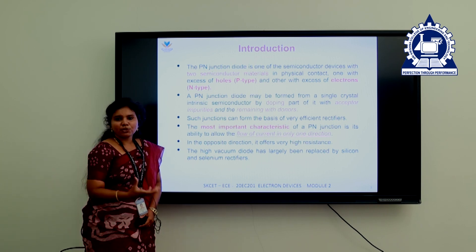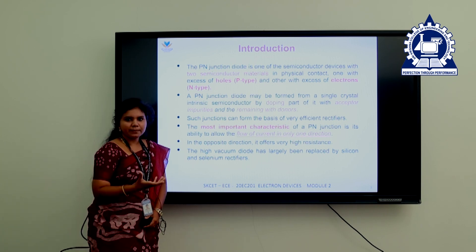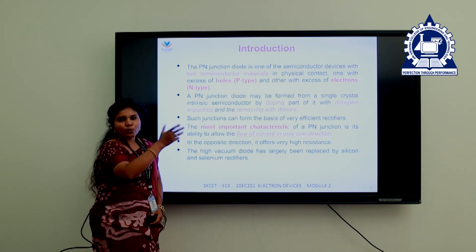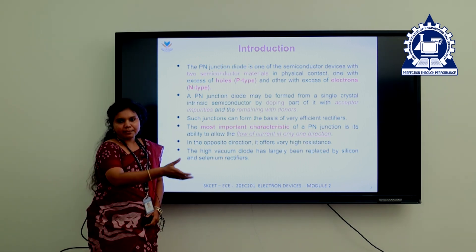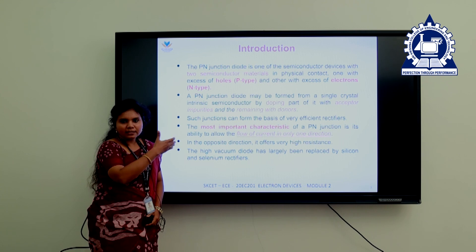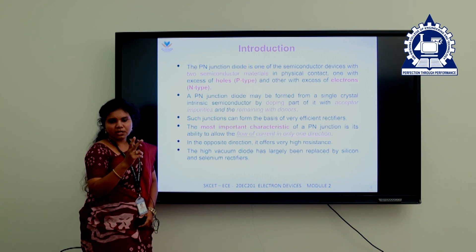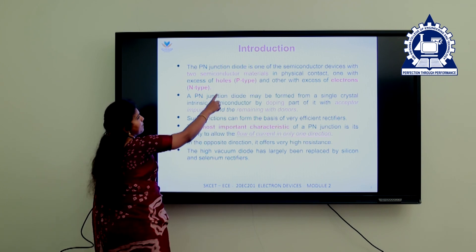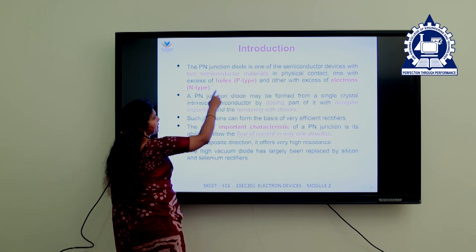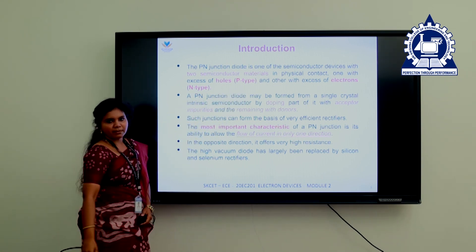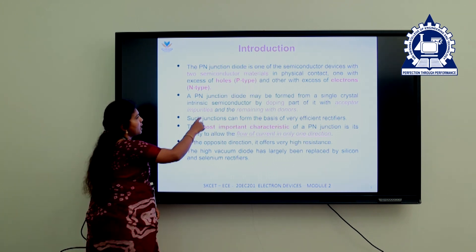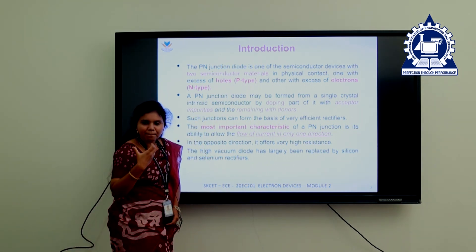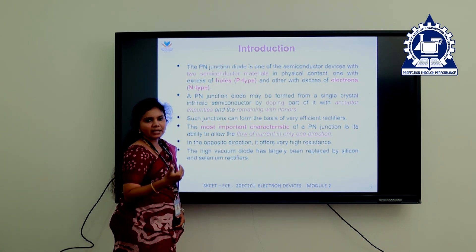Now coming to the formation — how a diode is formed. There are two semiconductor materials. One is the anode and the other is the cathode. The anode is made of P-type semiconductor and the cathode is made of N-type semiconductor. A P-N junction is formed when I combine a P-type semiconductor and an N-type semiconductor.